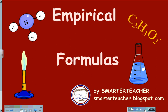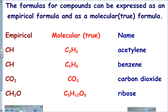Solving for Empirical Formulas. The formulas for compounds can be expressed as empirical formulas or as molecular or true formulas. The empirical formula is the atom value lowered to its simplest terms. So for the empirical formula CH, the molecular formula could be C2H2 for acetylene, or C6H6 for benzene. CO2, which is carbon dioxide, is both the empirical and molecular formula for carbon dioxide.